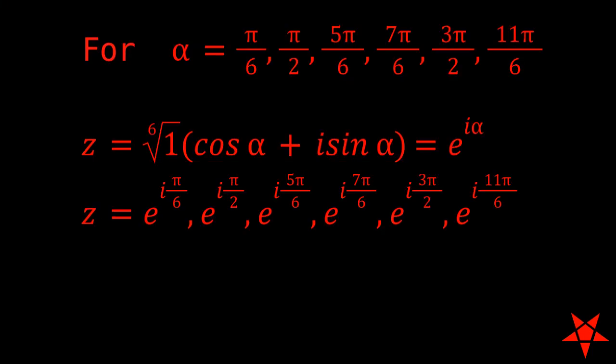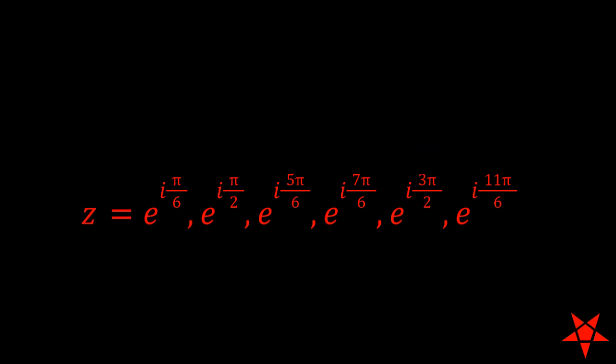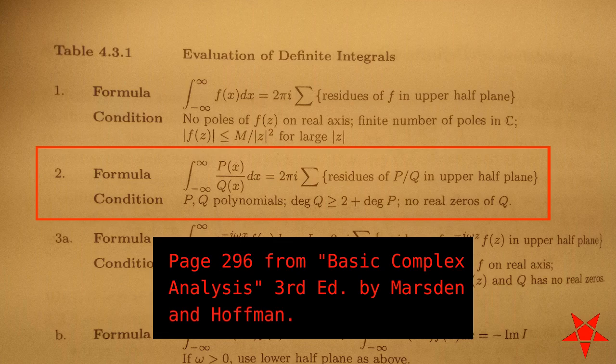These values are evenly spaced about the unit circle and show us where p over q has its singularities in the complex plane. Of the six possible values of z given by k values 0 through 5, there are three whose residues are of interest to us. The values of z corresponding to alphas pi over 6, pi over 2, and 5 pi over 6 all lie in the upper half of the complex plane, and we can't completely ignore the other values because we need to be sure that none of these fall on the real axis.